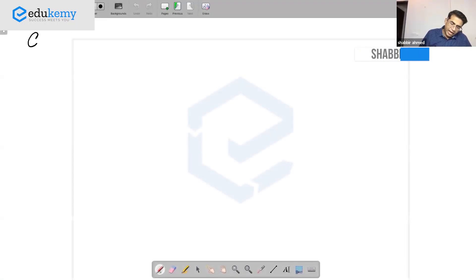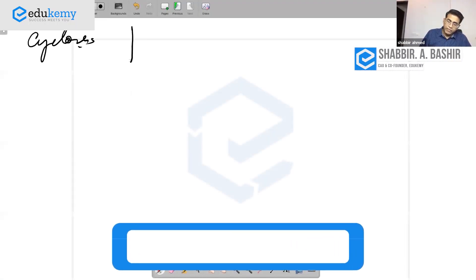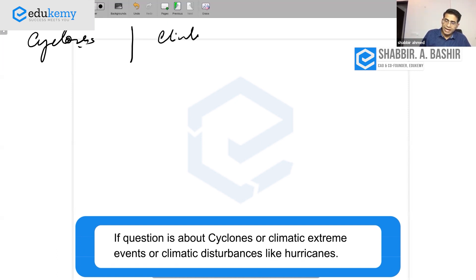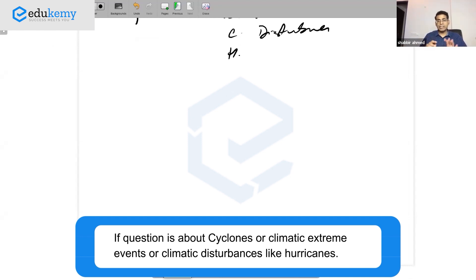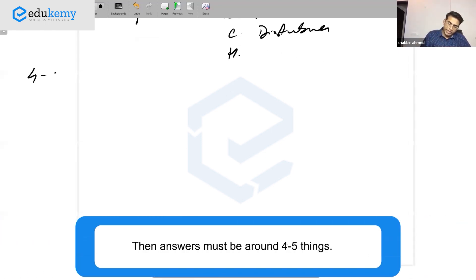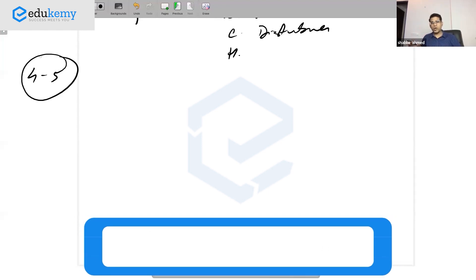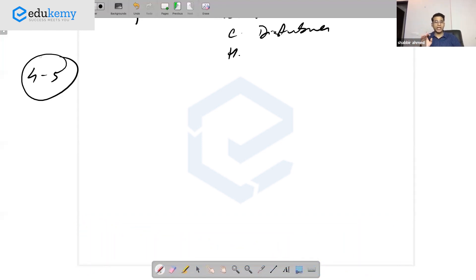When answering questions on cyclones, climate extreme events, or climatic disturbances like hurricanes, your answer must cover four to five key things. Any question on tropical cyclones, temperate cyclones, or disruptions - specifically storms or hurricanes - should address three to five core elements.